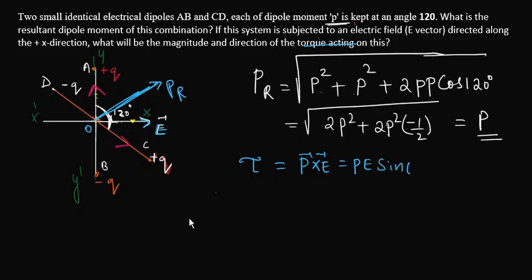PE sin theta. We need to find out the angle between dipole moment P and electric field E. Just look at this diagram, we can see that the angle between PR and E we need to find out.